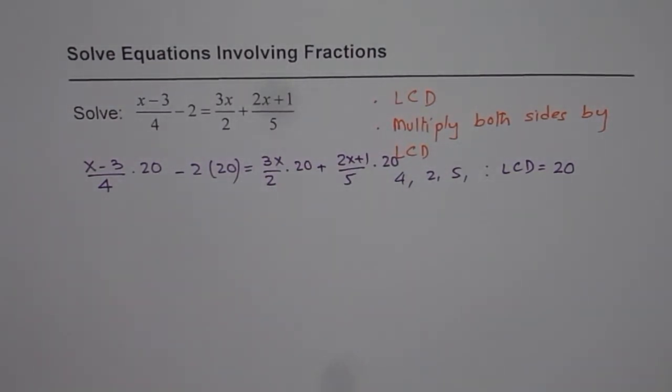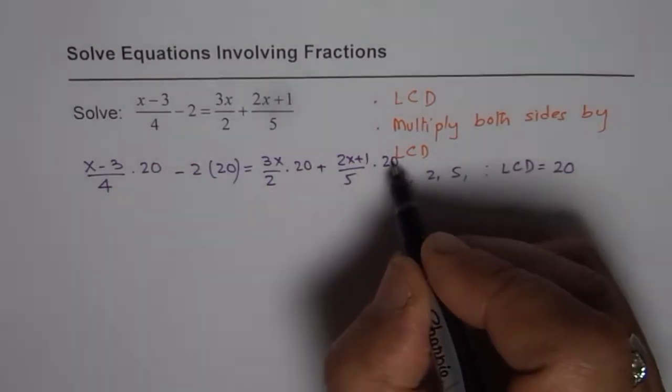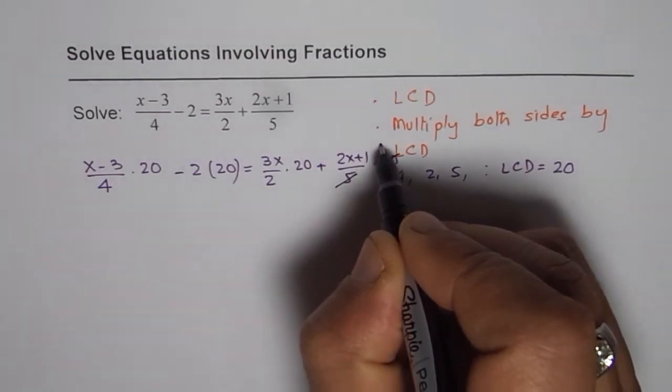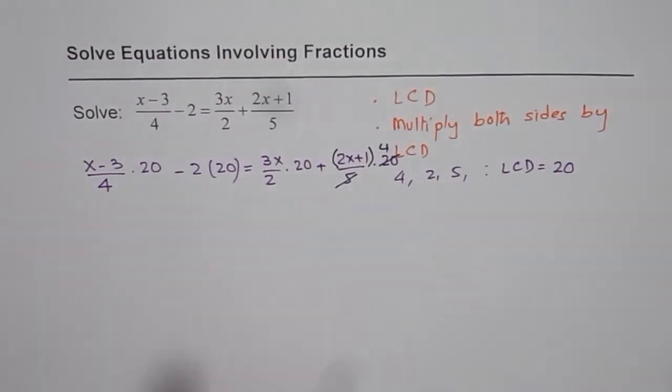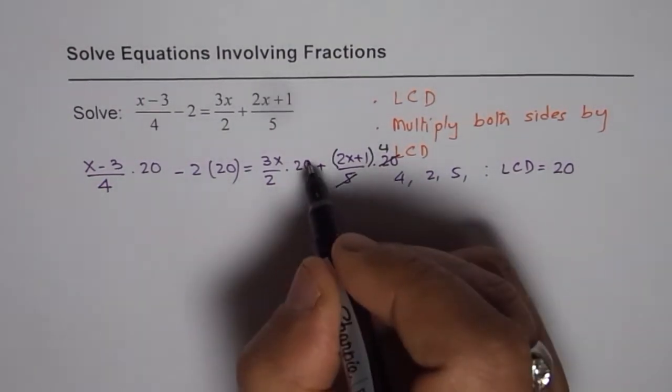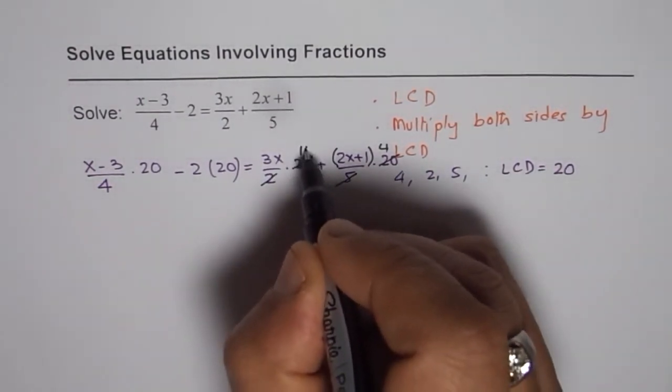Now when we do so then we can simplify them. So 20 divided by 4 gives us 5. Remember you have to multiply 5 with both the terms on the numerator. Now this 20 divided by 2 will go 10 times.